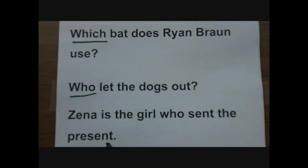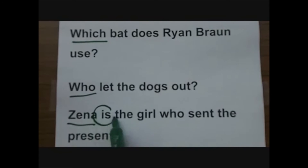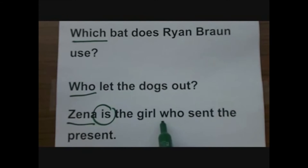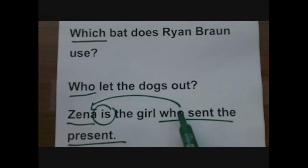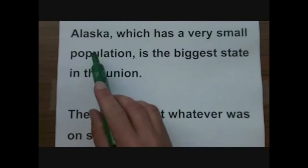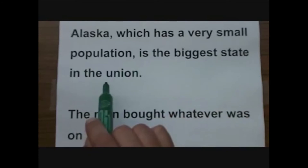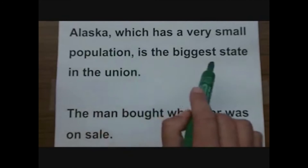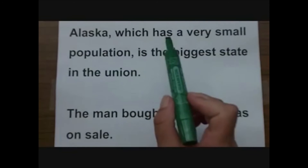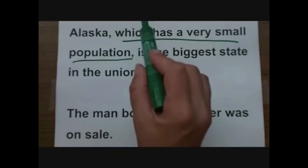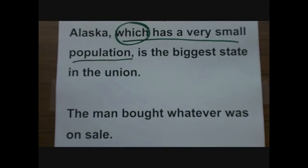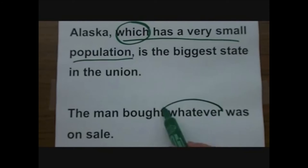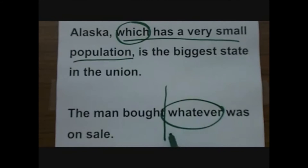Let's look at some examples. 'Xena is the girl who sent the present.' Here, Xena is the subject, 'is' is the verb, and 'who' introduces another clause describing Xena — this is called a relative pronoun. Another example: 'Alaska, which has a very small population, is the biggest state in the Union.' The main clause is 'Alaska is the biggest state in the Union,' and the subordinate clause is introduced by the relative pronoun 'which.' Finally, 'the man bought whatever was on sale' — 'whatever' is the relative pronoun introducing the clause.